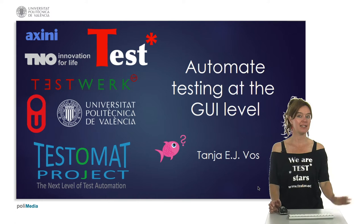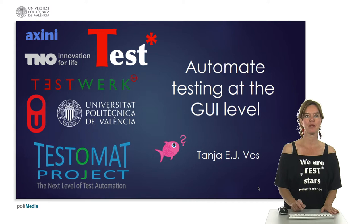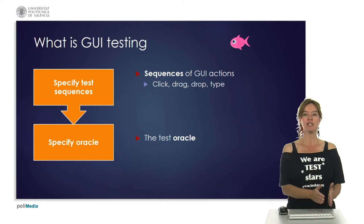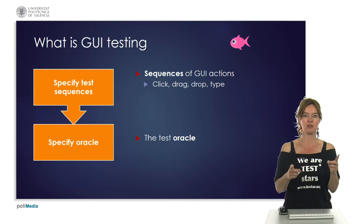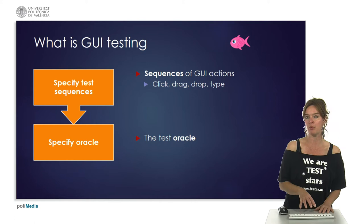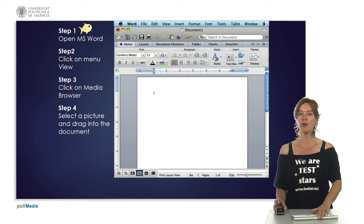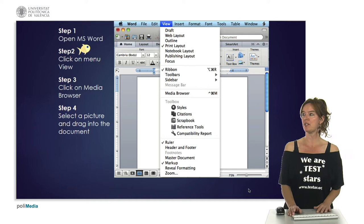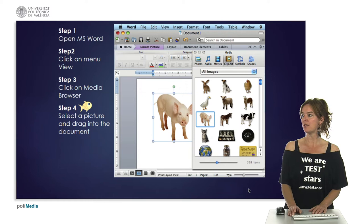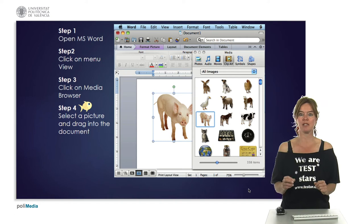Hi, this is Tanja Fors again. In this video I'm going to talk about how to automate testing at the graphical user interface level. In a previous video we've seen what GUI testing is: it consists of specifying test sequences of graphical user interface actions like click, drag, drop, type, scroll, etc., and defining a test oracle that indicates whether every state is correct or not. For example, testing Microsoft Word: open it, click on the menu View, select the Media Browser, and drag a picture into the Word file. This is a typical small test sequence that we have to execute manually each time.